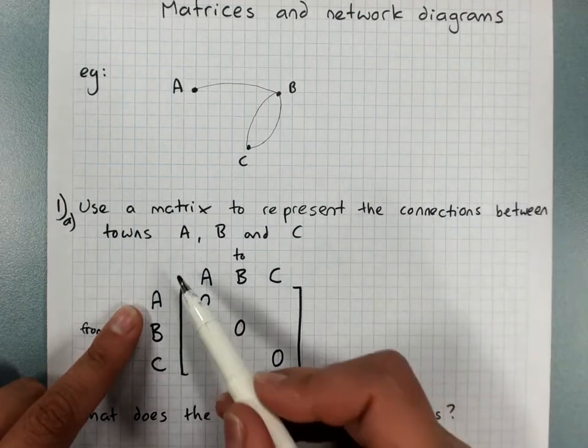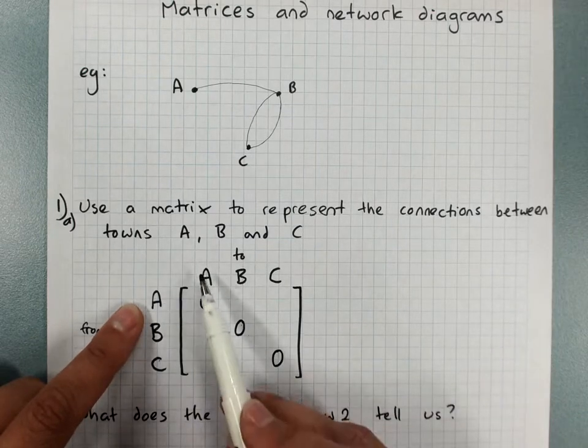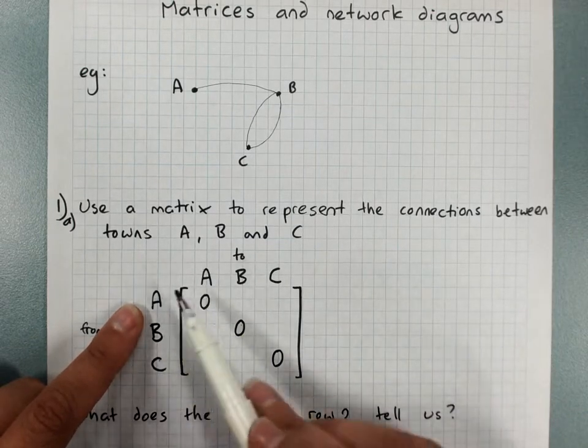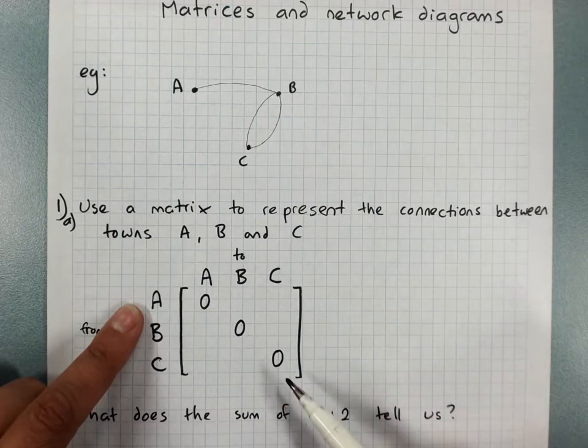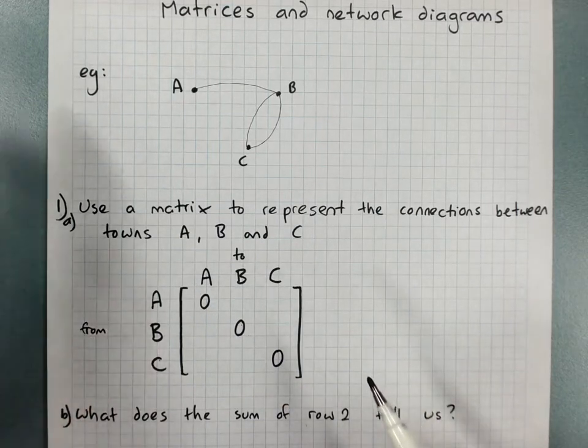And you'll often see a pattern in this diagonal linking identical things down a matrix. This is called the leading diagonal and we'll talk about it at some stage later.